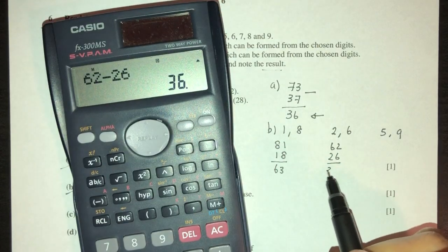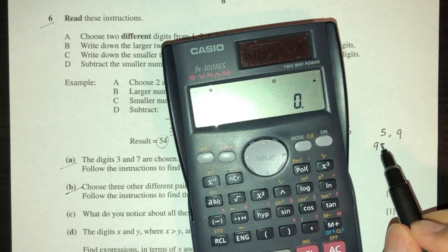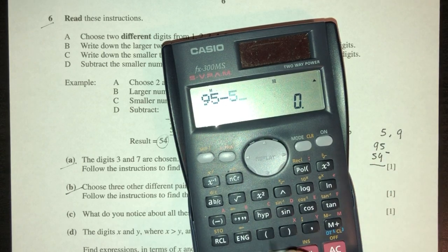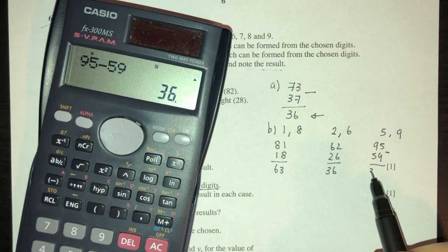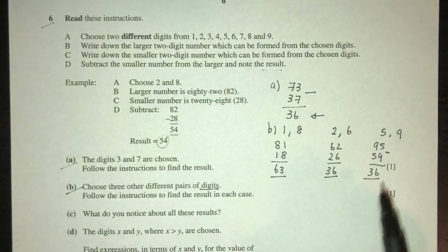Now we have 95 minus 59, that should be 36 as well. And the results are this, this, and this, as you can see.